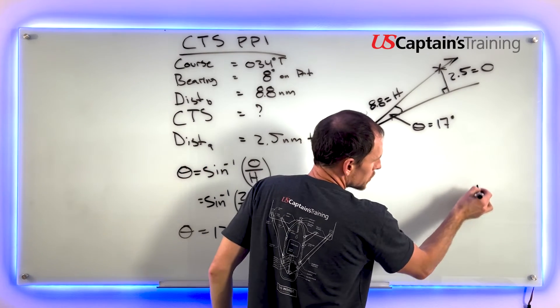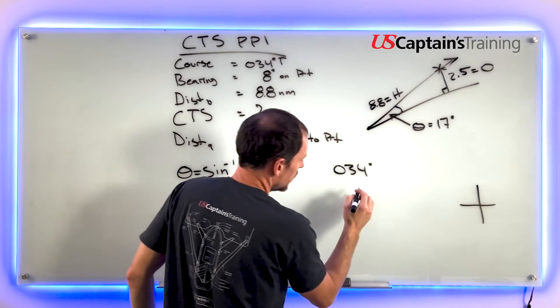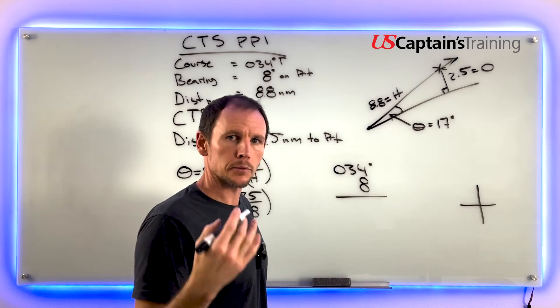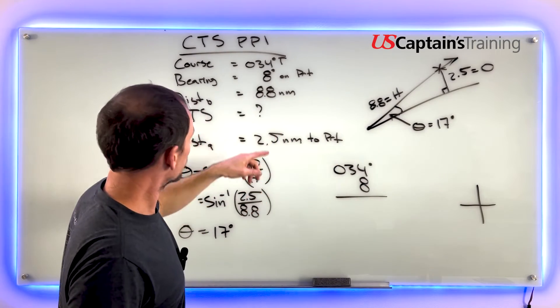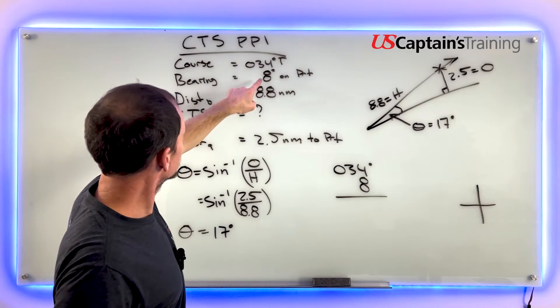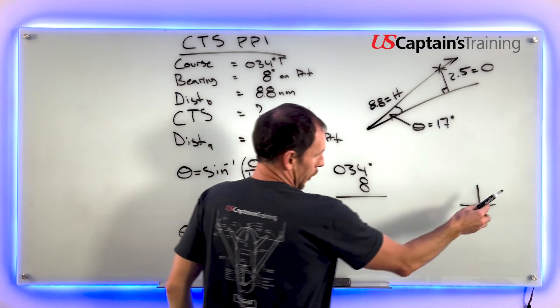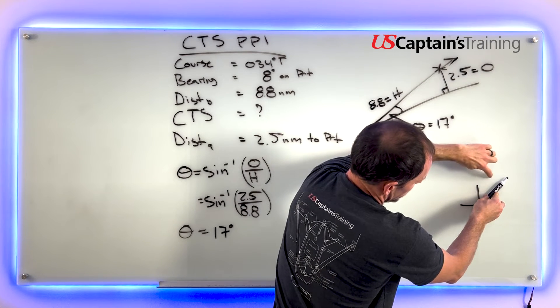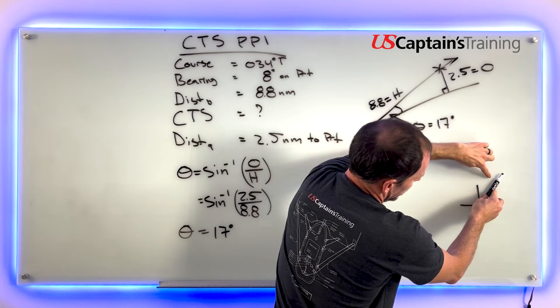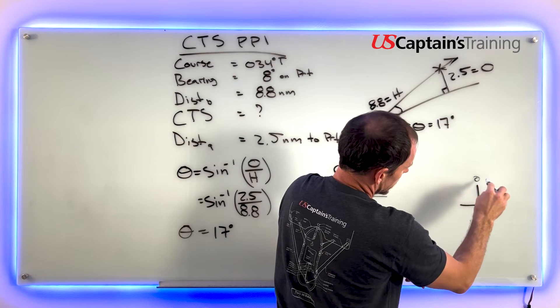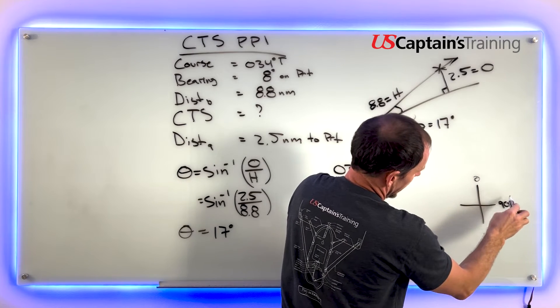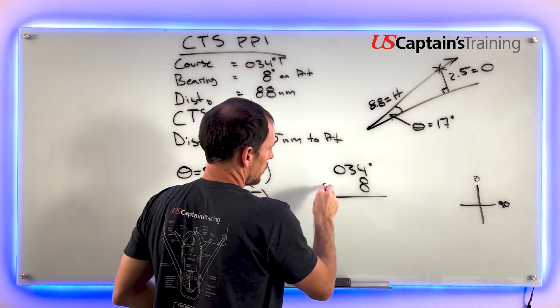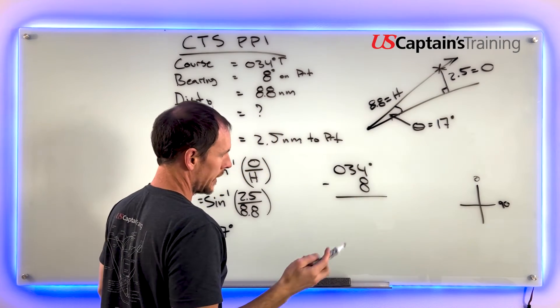This is where the visualization comes in. We have 8 degrees - do we add or subtract? If we're on 34 degrees and this thing is 8 degrees to port, and we change our course to it, we're subtracting. We're heading back toward zero, from 90 to 0 to port, so we're going to subtract.